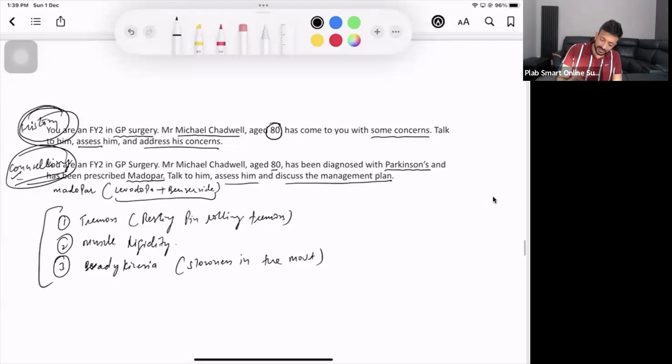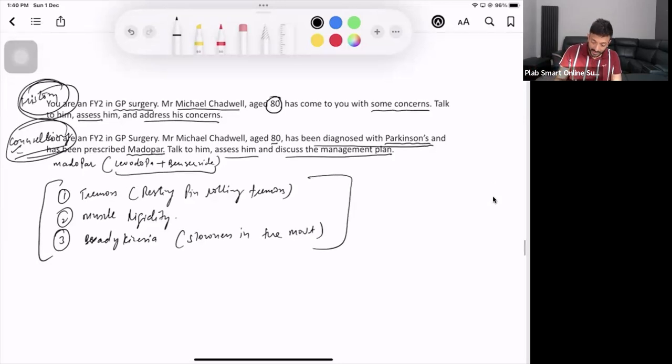But mostly they give you the scenario only where it is diagnosed case of Parkinson's. So what you will do? You'll ask the patient, how are you feeling now? Doctor, I'm feeling better. Do you still have symptoms? No, doctor, I'm feeling better. Do you have tremors? No, doctor. Any muscle rigidity? No, doctor. Are you able to do your daily routine things properly or you are feeling that you are pretty slow? No, doctor, I'm able to do these things as well. So this is how you can do the assessment of the patient.